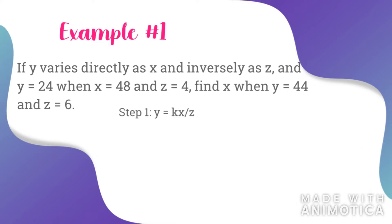Step number one: write the correct equation. In this case, we will combine the direct and inverse variation equations, so it will be y is equal to kx over z. Step number two: use the information given in the problem to find the value of k. In this case, you need to find k when x is equal to 48, y is equal to 24, and z is equal to 4.